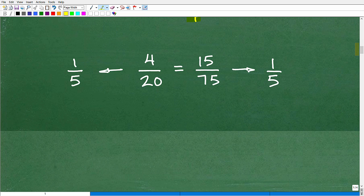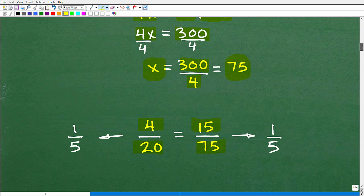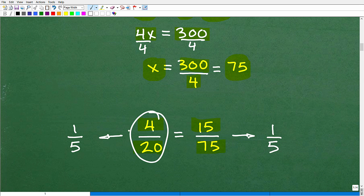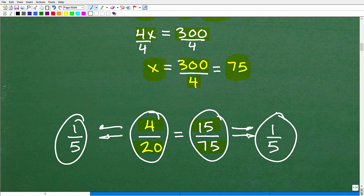So now we can just say it this way. 4 is to 20 as 15 is to 75. That's where our X was. And now if you notice, both of these fractions will simplify or reduce down to the fraction one-fifth. And that is, again, this fraction is equal to one-fifth and this fraction is equal to one-fifth. So we have two fractions that are equal to one another. That's the definition of a proportion.